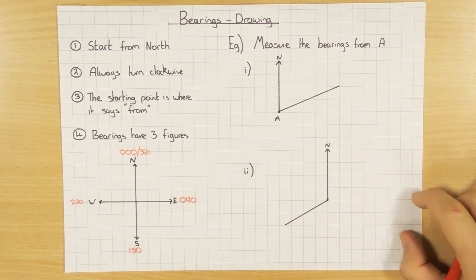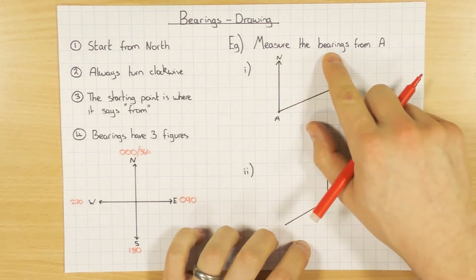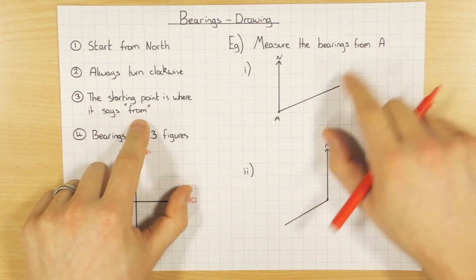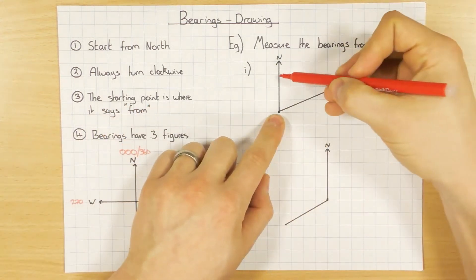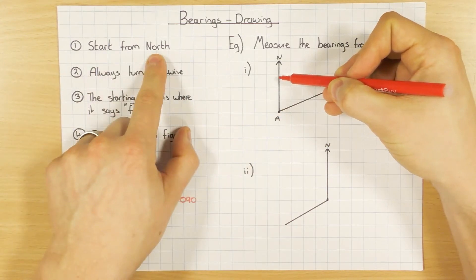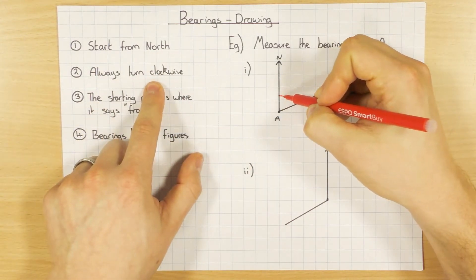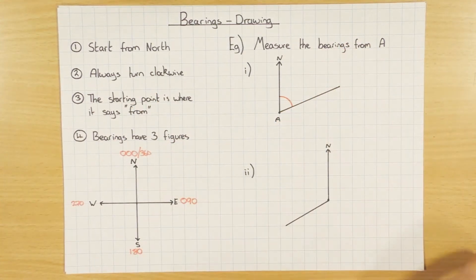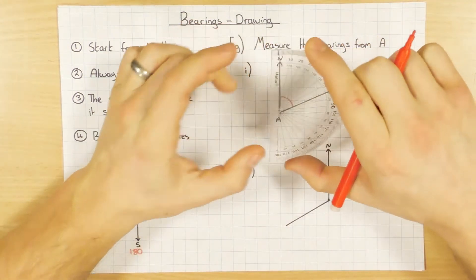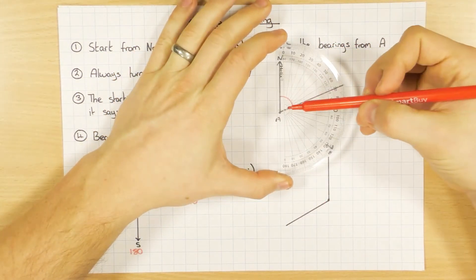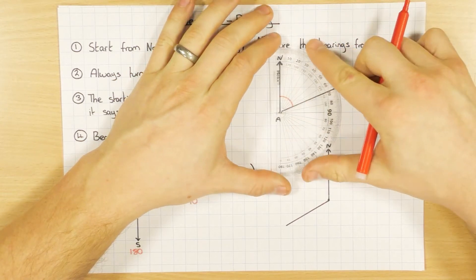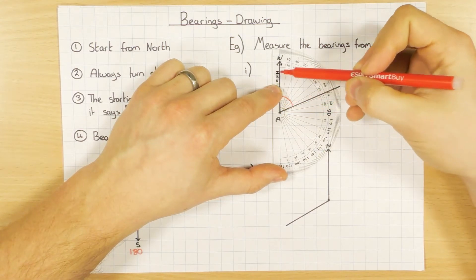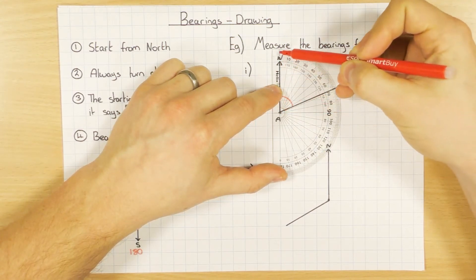So let's have a look at some measuring then. Measure the bearing from A. So from A is where I'm starting. So I start at north and I turn clockwise. That's the angle that I need to work out, because that's going to be the bearing. For this you're going to need your protractor. Get the little crosshair bit on point A. And because we start at north, line it up with the north arrow.